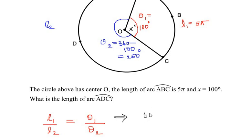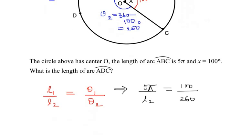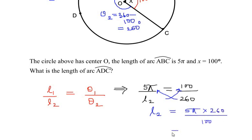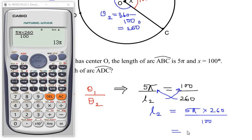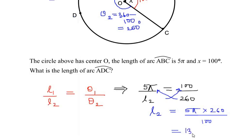Substituting, we have 5π over l2 equals 100 over 260. Cross-multiplying gives us l2 times 100 equals 260 times 5π. Rearranging, l2 equals 5π times 260 divided by 100, which gives us 13π. So the answer is 13π, or approximately 40.84 in decimal. Since the given arc length was expressed in pi, I will keep the answer as 13π.